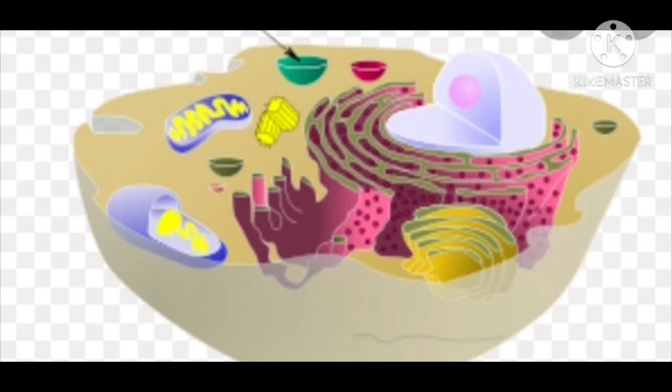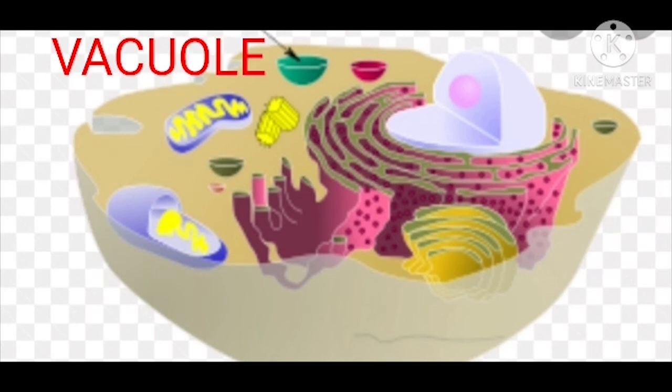When you observe onion cells under the microscope, you can see a blank-looking structure in the cytoplasm called the vacuole. It could be single and large as in the onion cell, or smaller as in the cheek cell. Larger vacuoles are common in plant cells, while vacuoles in animal cells are much smaller.